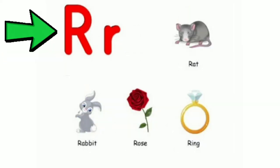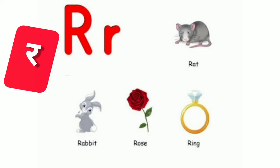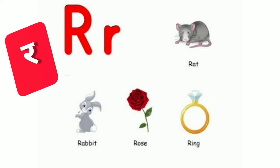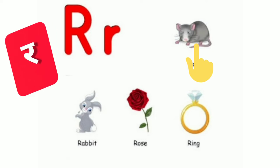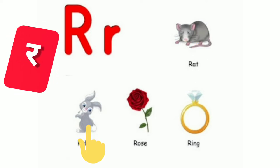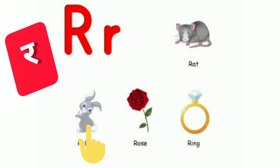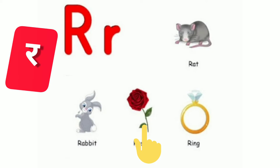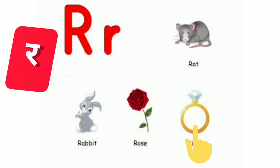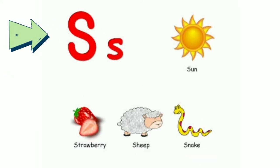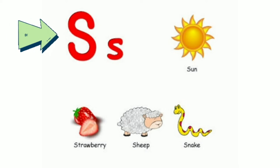The next word is R. R sound is R. Rat. Rabbit. Rose. Ring.